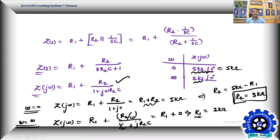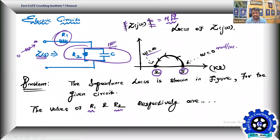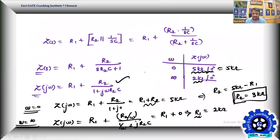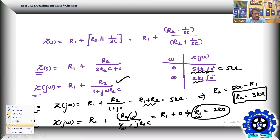That is why the capacitor is not really coming into play — that data is redundant. The starting and ending points of the impedance locus are enough. This was an MCQ problem, and only one option had R1 = 2 kΩ and R2 = 3 kΩ, which is the correct answer.